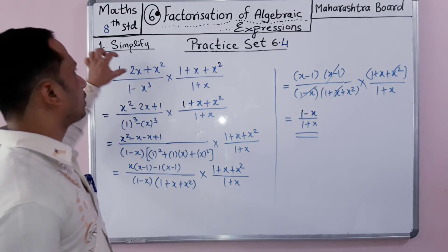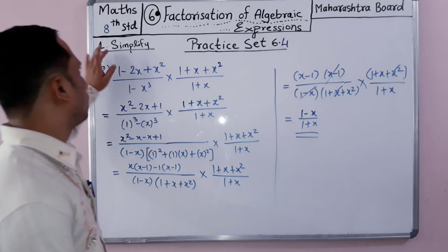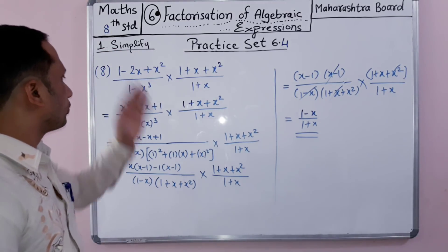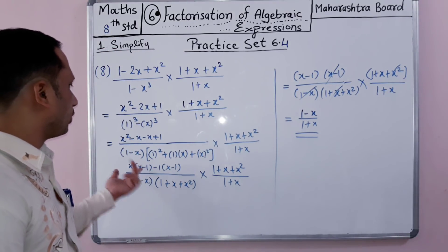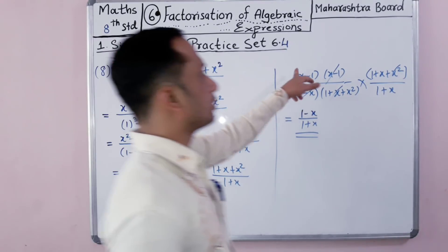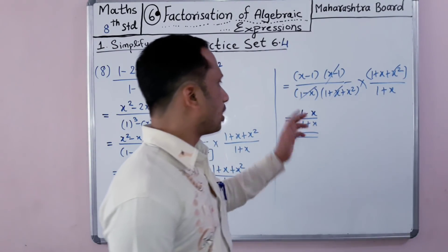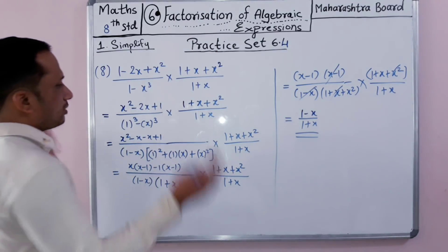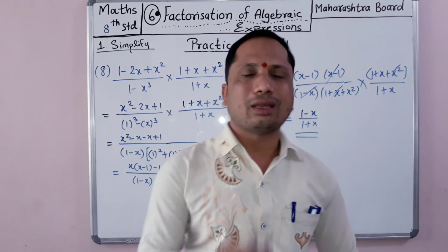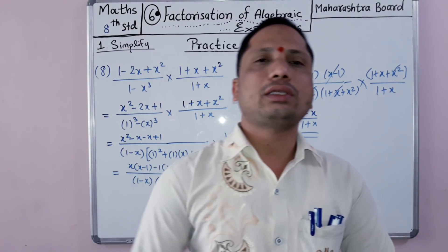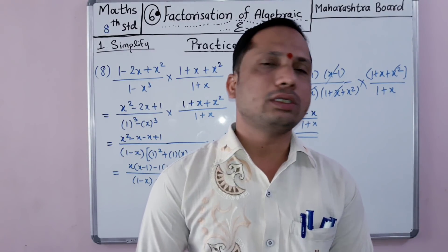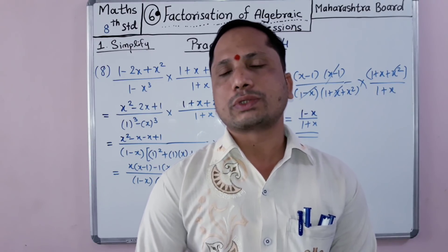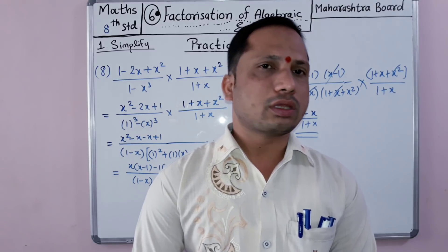We can also do the factorization in reverse: writing 1 minus x minus x plus x squared gives 1 minus x and 1 minus x as two separate factors, so 1 minus x squared over 1 plus x, which is the same solution. With this, practice set 6.4 is completed. If you like this video, don't forget to subscribe and like the channel. Thank you for watching.